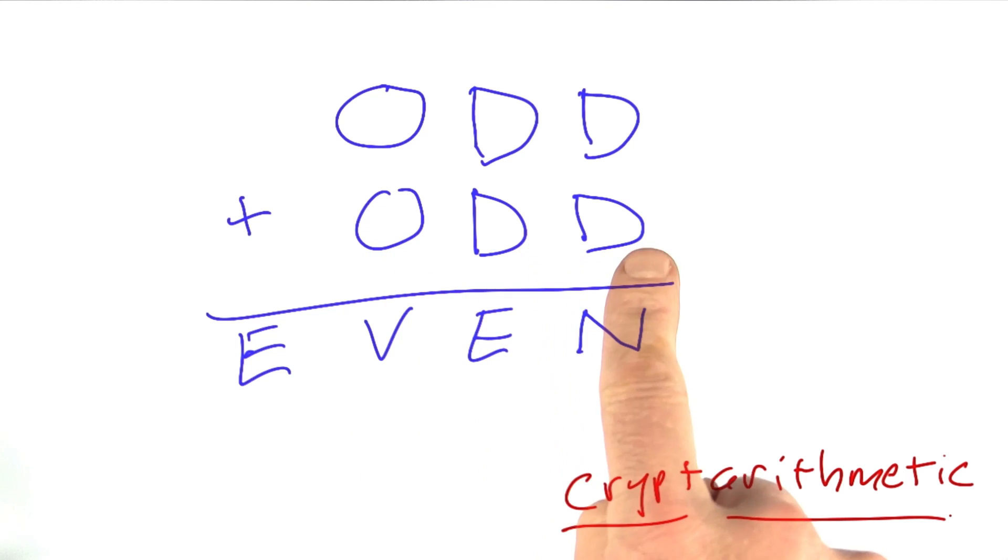And the idea here is that each of these letters of the alphabet stands for some digit from 0 to 9, and the problem is to figure out which digit stands for which such that the equation will be correct. Some people call these alphametics, is another name for them.